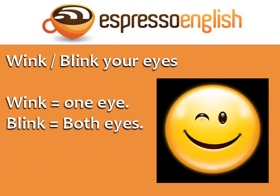Wink. Blink your eyes. You wink when you close only one eye and quickly open it again. This means something is funny or cute. Sometimes people also wink when they are romantically interested in another person. You blink when you close both eyes and quickly open them again. This gesture doesn't have any particular meaning, because we do it constantly.